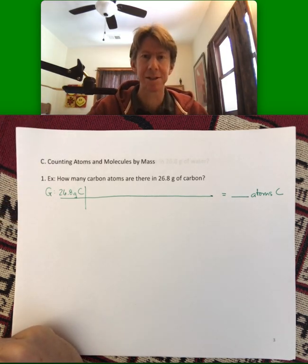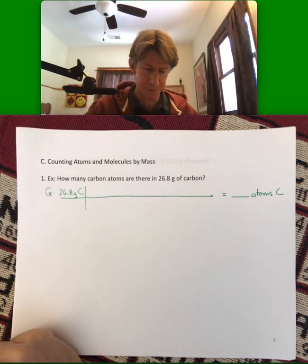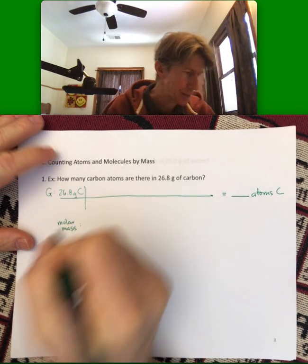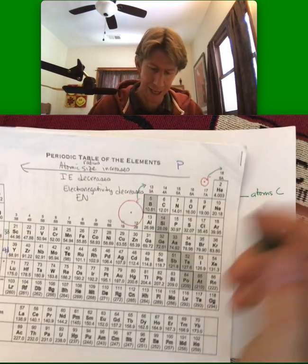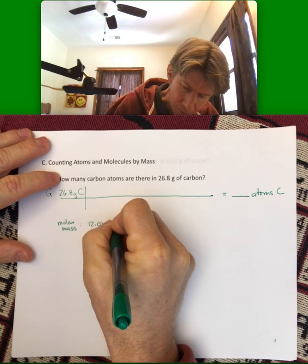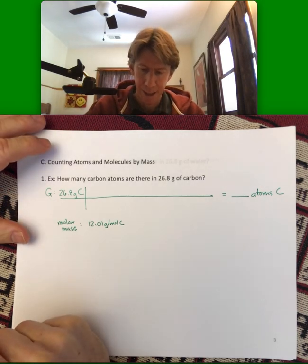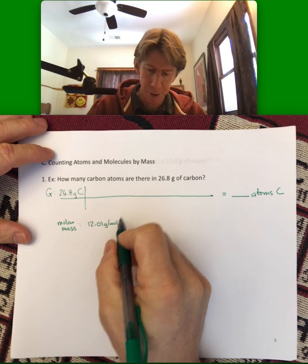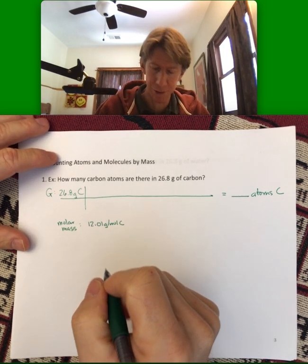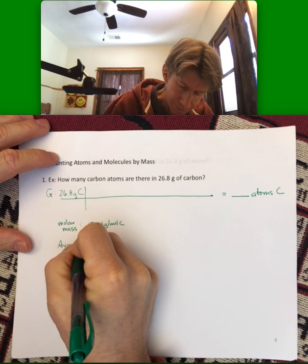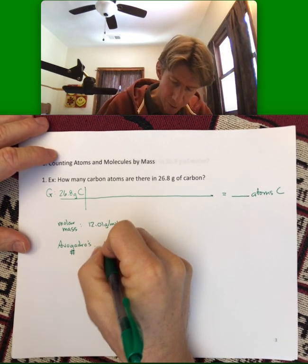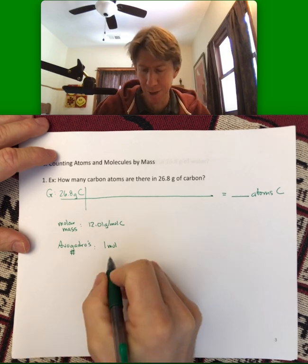We have a couple sets of conversion factors now. We have from grams to moles, and that's called the molar mass. The molar mass for carbon, since it's just carbon, it's an atom, is going to be 12.01 grams per mole of carbon. So that gets us to moles, but we want atoms. And as we've already talked, we have to use Avogadro's number, which is the number of things in a mole.